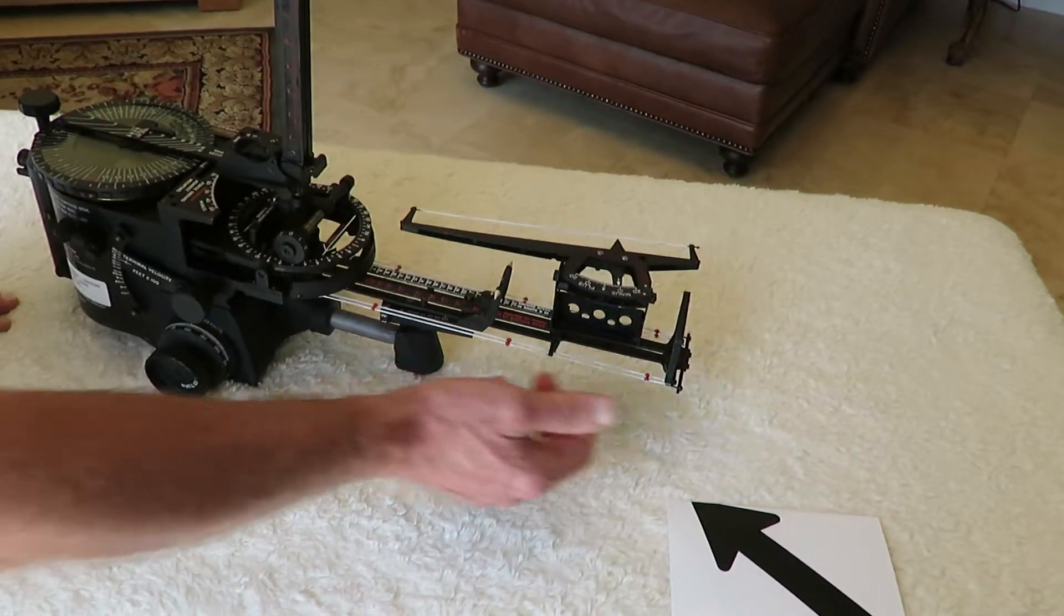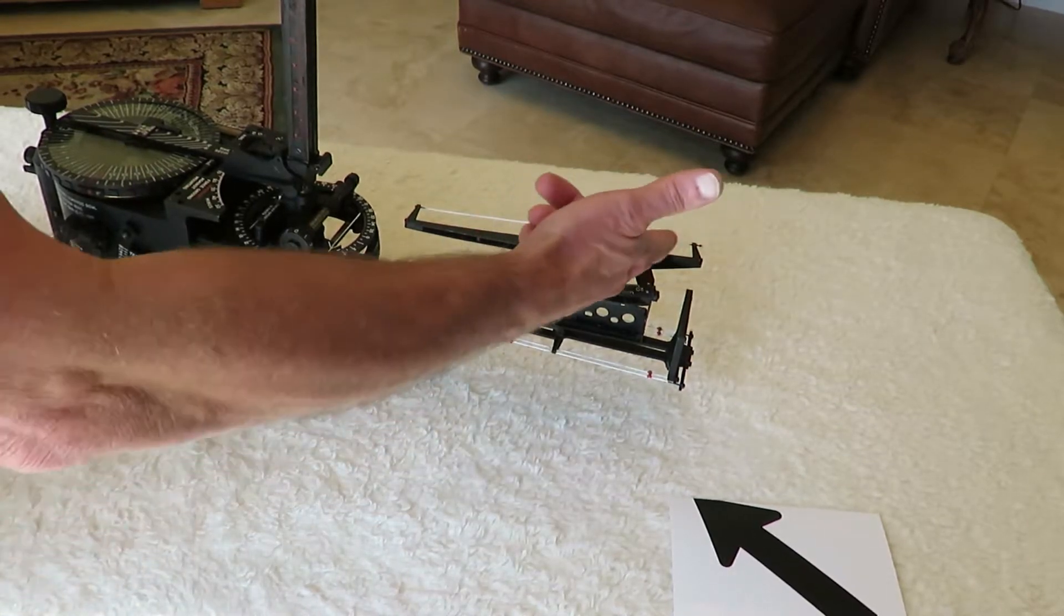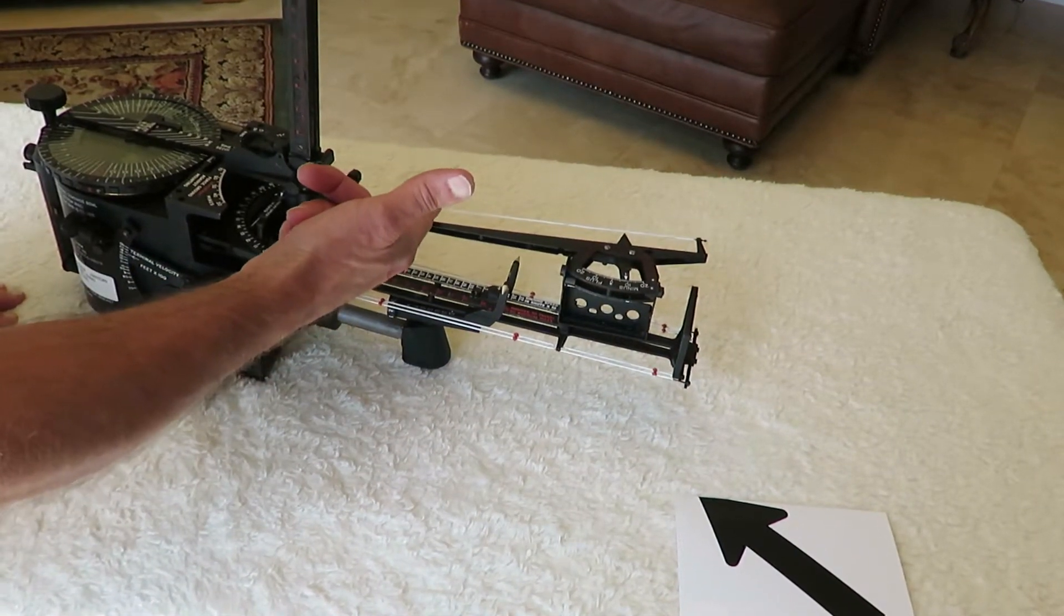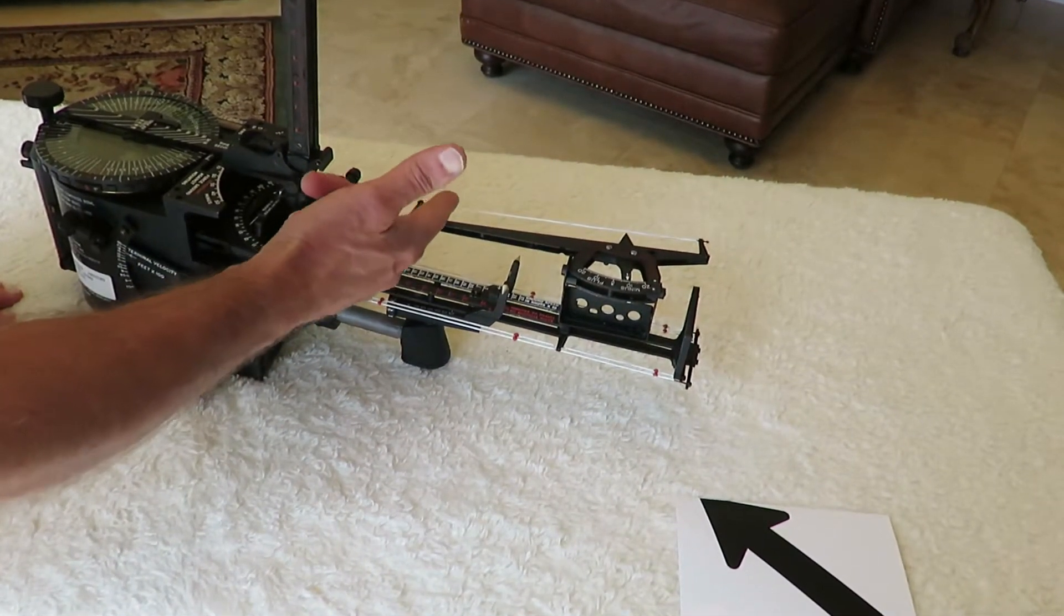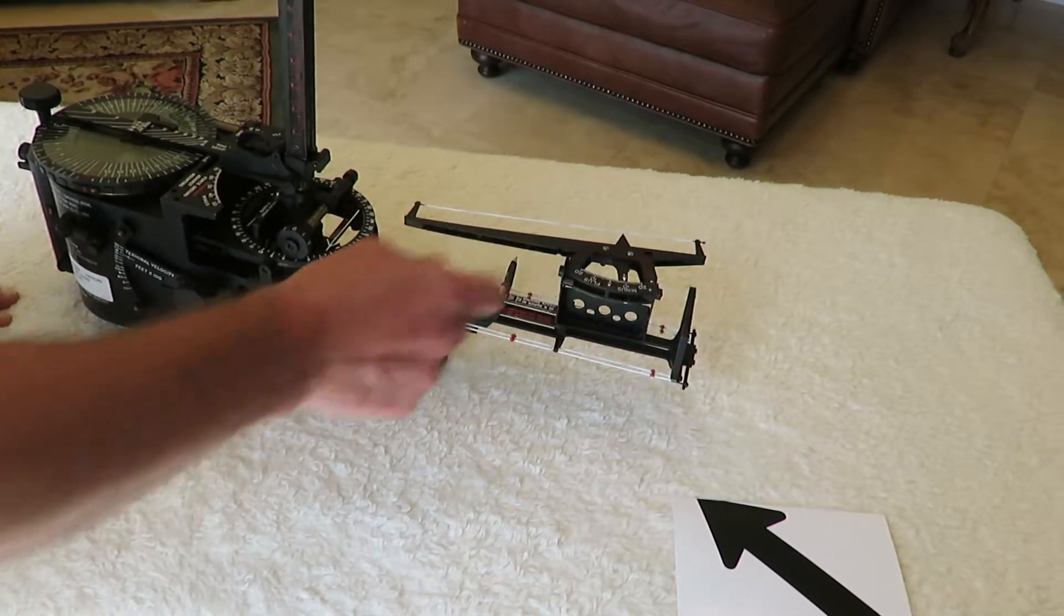We can use the auxiliary drift bar to help determine what that drift angle is. We adjust this until we see objects on the ground passing underneath this wire here on the auxiliary drift bar. This tells us that our drift angle is minus 10 degrees.